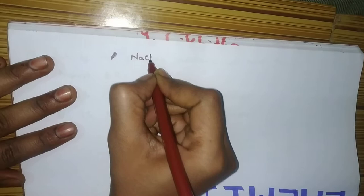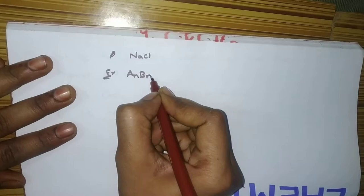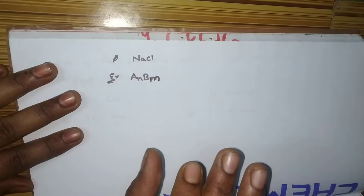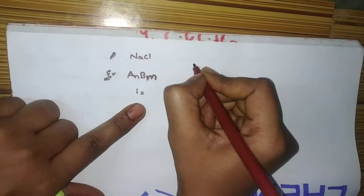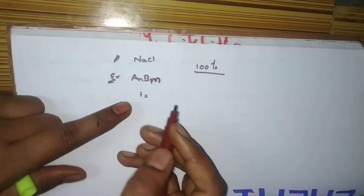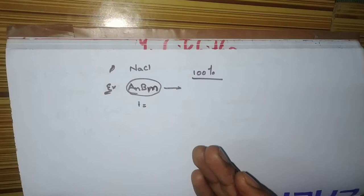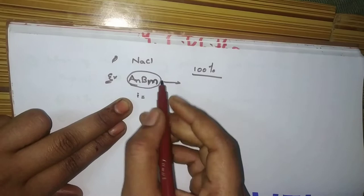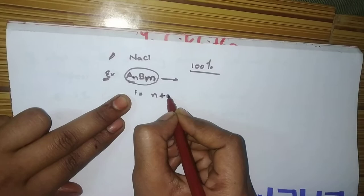See here. Suppose, a compound like NaCl. I am writing the general one. A_N B_M. This compound is an electrolyte. Assume it as electrolyte. And, you have to find the Van't Hoff factor. This is for 100% dissociation, students. For 100% dissociation. i is equal to, what is this 100% dissociation? This compound in the solution will completely dissociate. What is the Van't Hoff factor here? Trick is, N plus M. That's it.